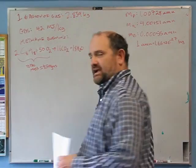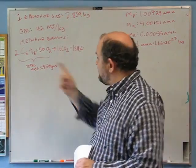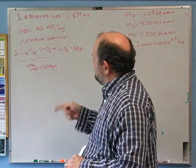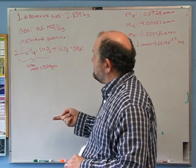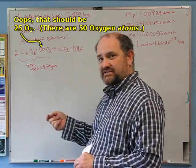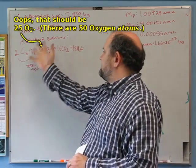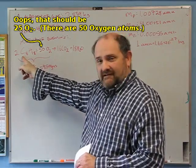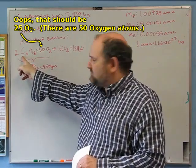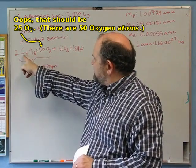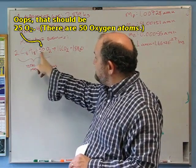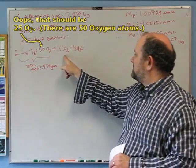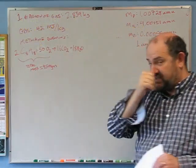I went and looked it up. Octane does in fact have eight carbons — C8H18 — not 32 hydrogens as I assumed, but 18. When you burn octane, it takes 25 oxygen molecules together with 2 octane molecules to make 16 carbon dioxides and 18 waters.